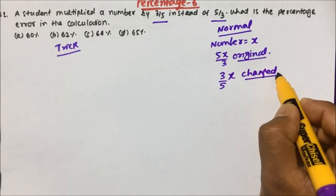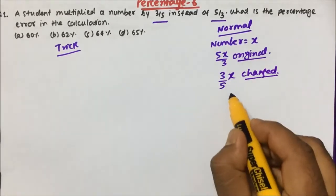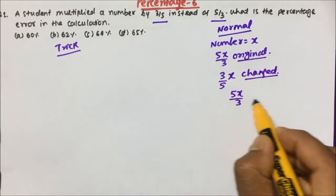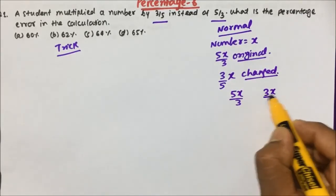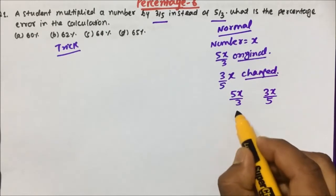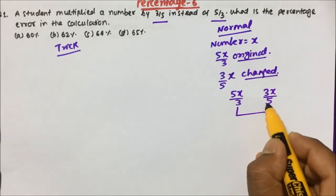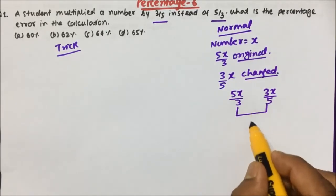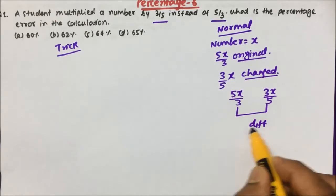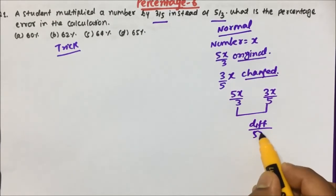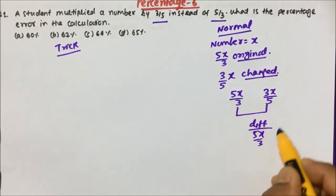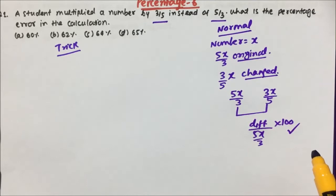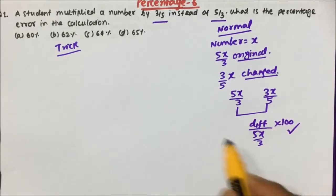They are asking what is the error. To find the error, take the original value minus the changed value, divide by 5x/3, then multiply by 100 to get the percentage error answer.